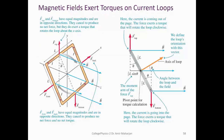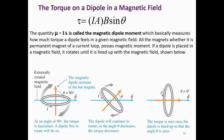A magnetic field also exerts torque on a current loop. Consider a rectangular coil in a magnetic field: on each side the magnetic field exerts an equal and opposite force, generating a torque. That torque is given by τ = IAB sinθ, where I is the current, A is the area of the coil, B is the magnetic field, and θ is the angle between the magnetic field and the area vector — which is the vector perpendicular to the plane of the coil. The torque depends on the angle between the magnetic field and the area vector.